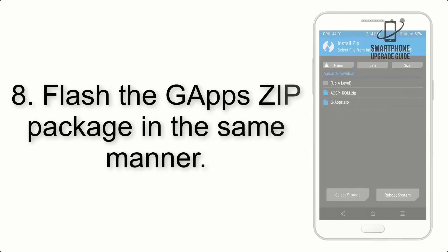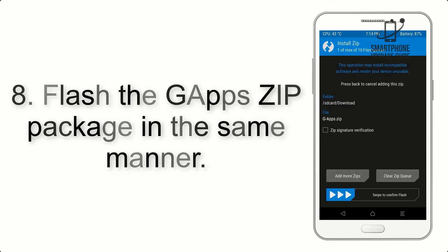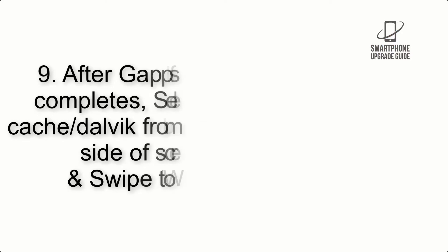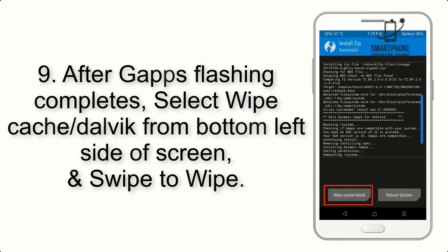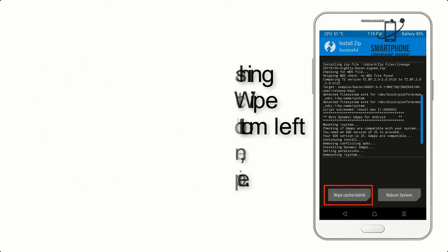Step 8: Flash the GApps ZIP package in the same manner. Step 9: After GApps flashing completes, select Wipe Cache and Dalvik from the bottom left side of the screen, and swipe to Wipe.